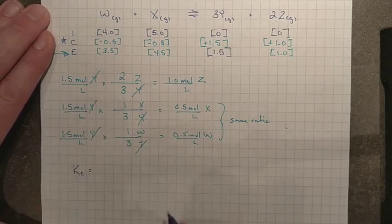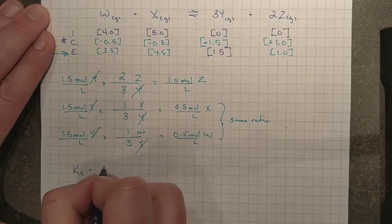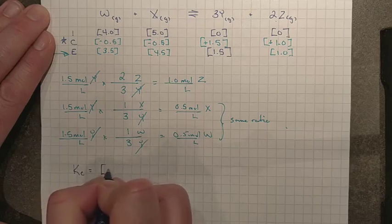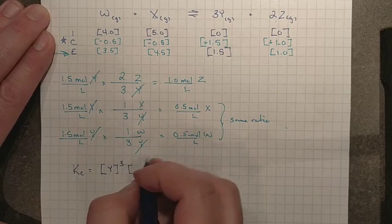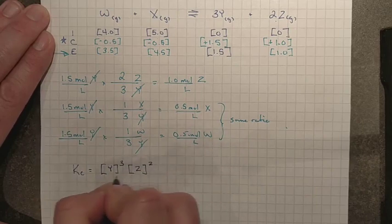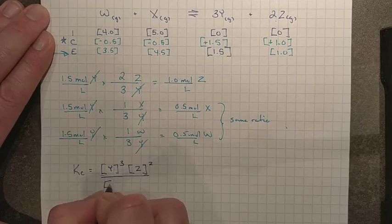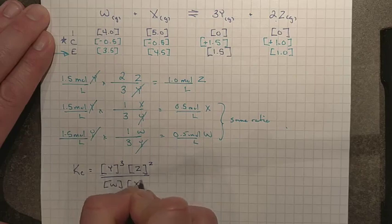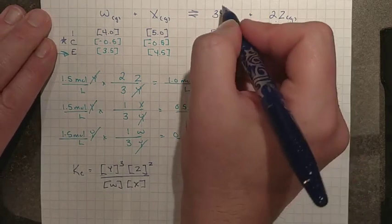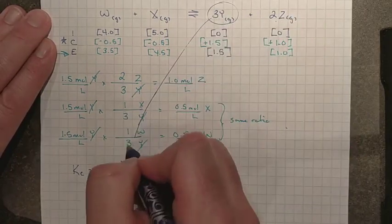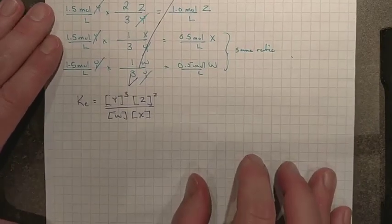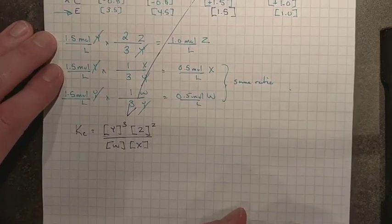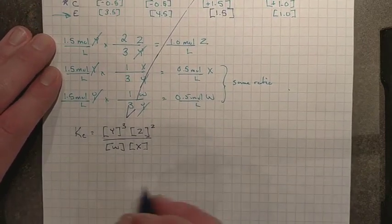I should take the time to write out a Kc expression. That is always wise, especially when you have molar coefficients other than 1. The number one mistake we make here is forgetting to do the balancing of the equation and include those molar coefficients. So, Kc for this one is going to be the value and concentration for Y raised to the power of 3. This one is going to be the concentration of Z raised to the power of 2, and it'll all be over the concentration of W and X. There's our template. We could look at them there, and it's pretty easy to set it up the right way. We now need to just put in our numbers.